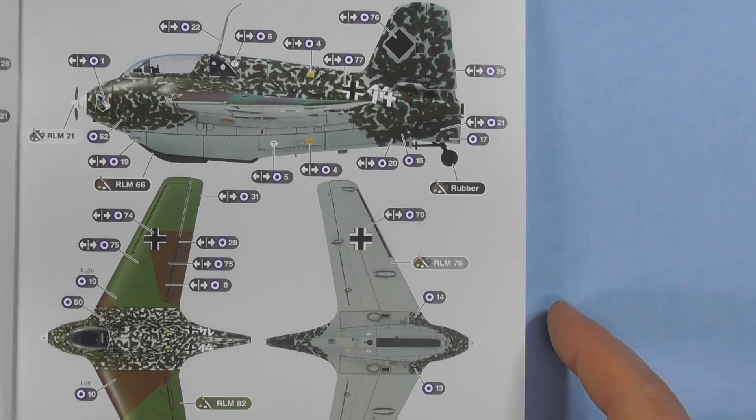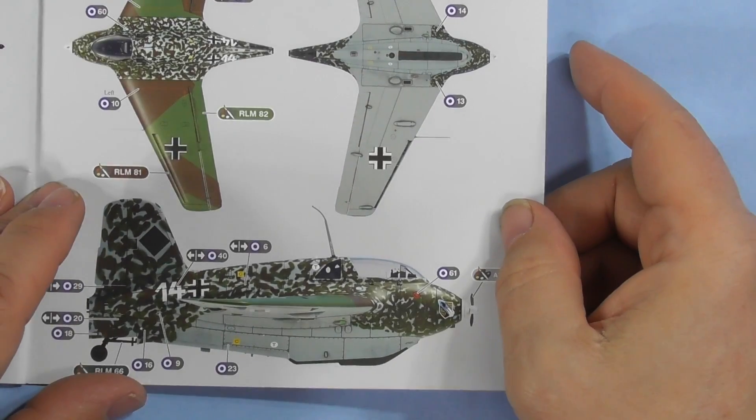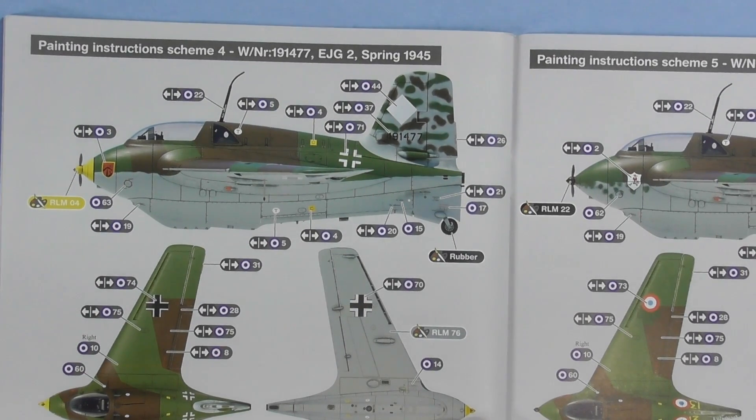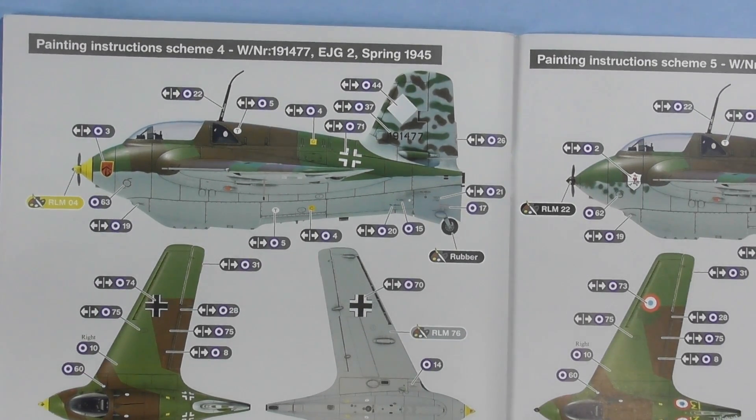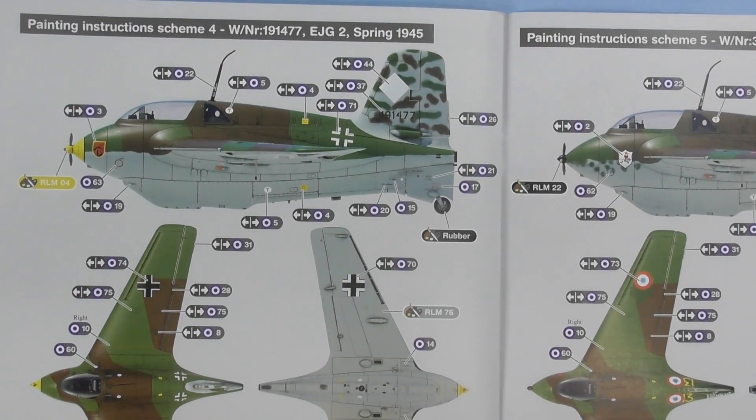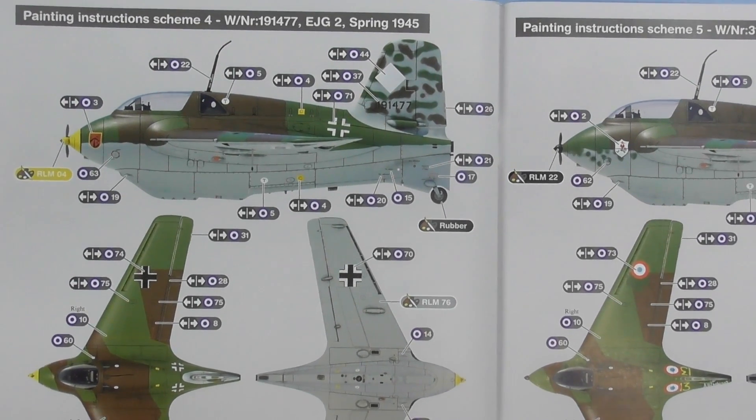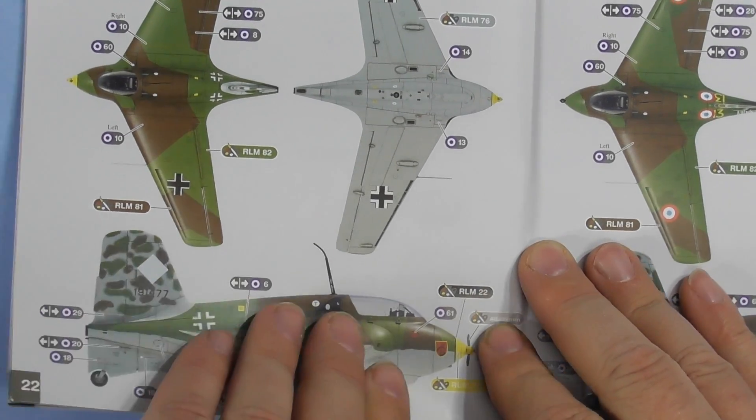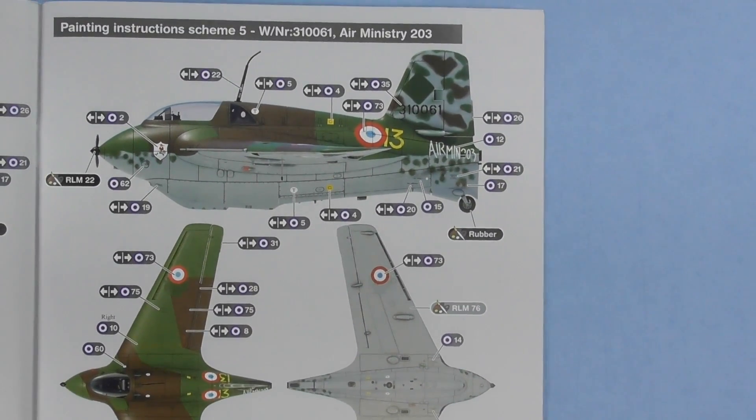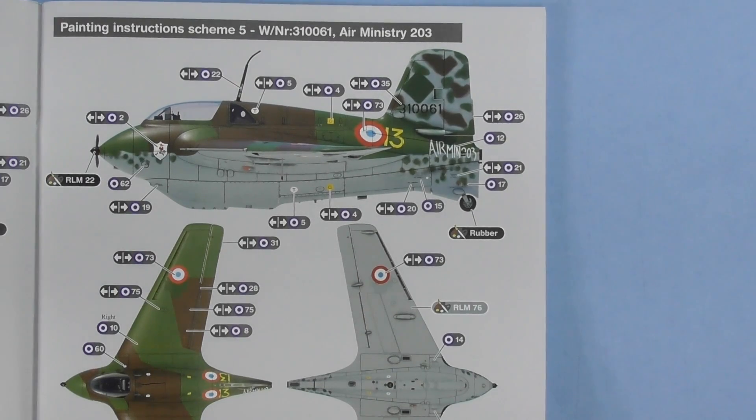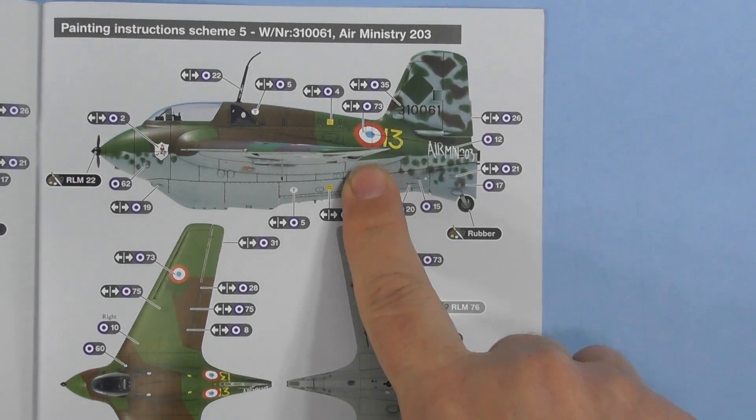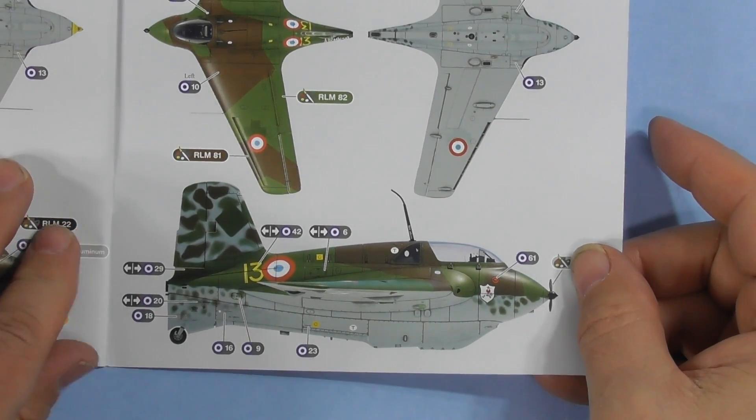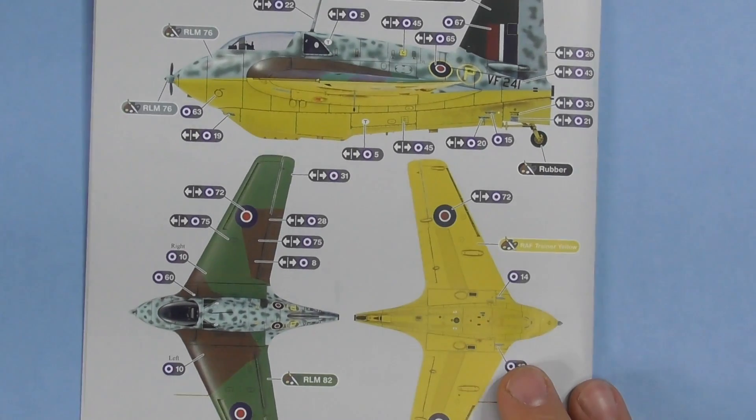Excuse me. Scheme four, spring 1945. Air Ministry 203. Even says Air Ministry decal right there, your roundels. We'd have a good diorama for that. And then captured UK post-war, the nice yellow underbelly. Wow, this is an impressive little kit.